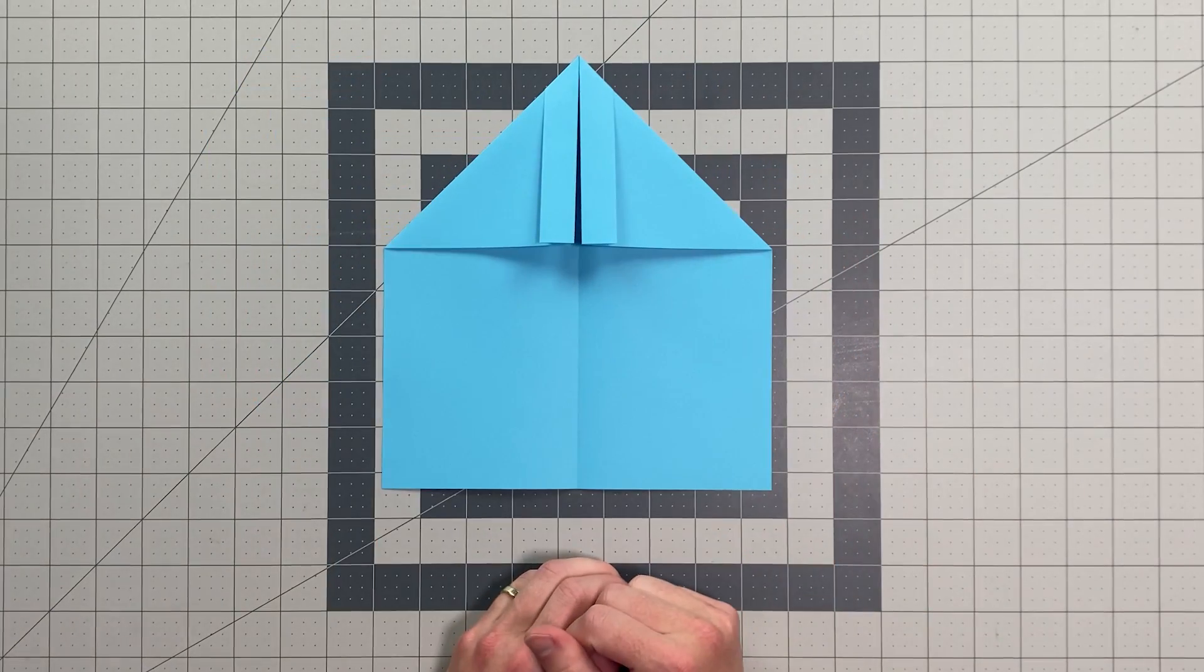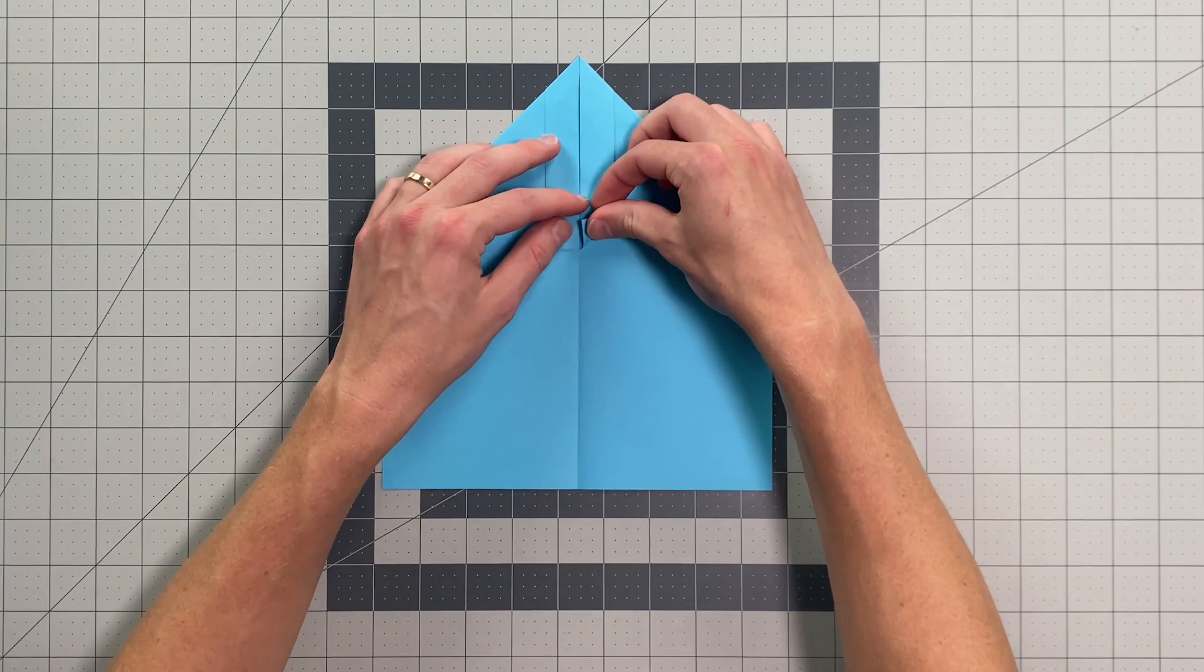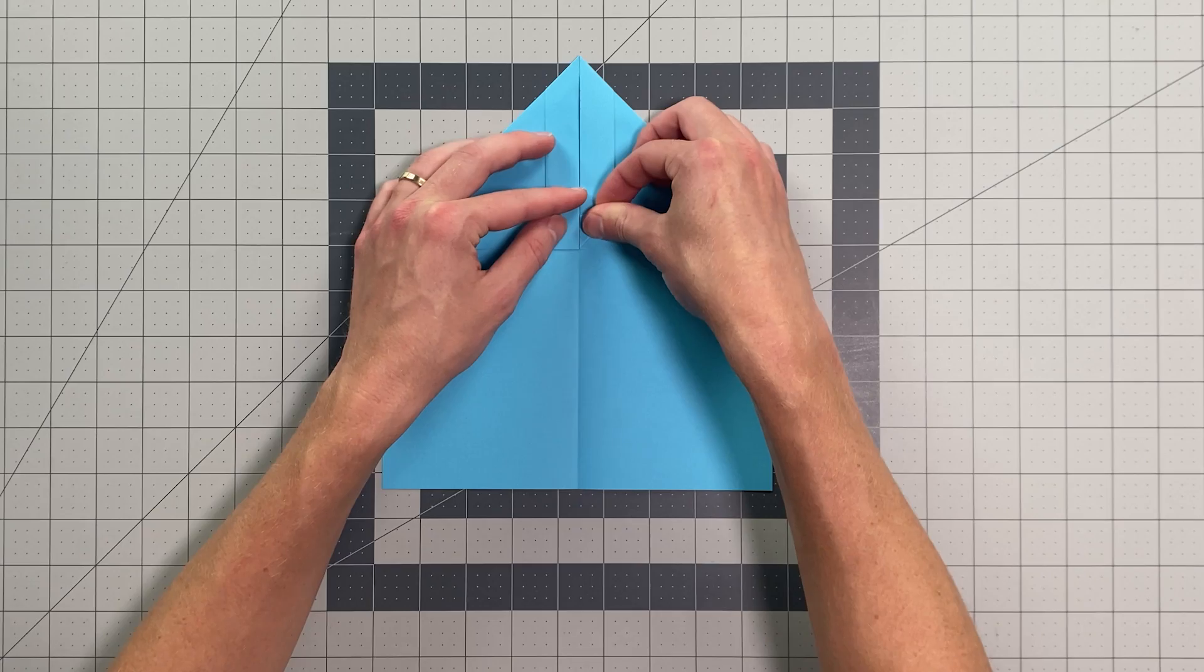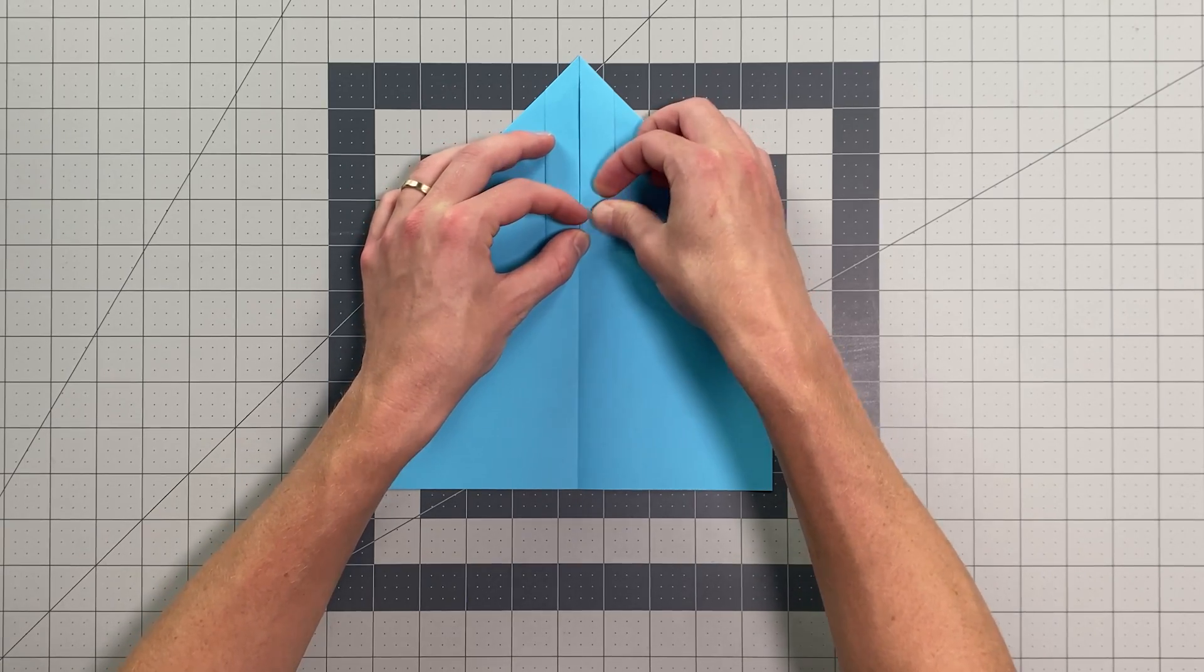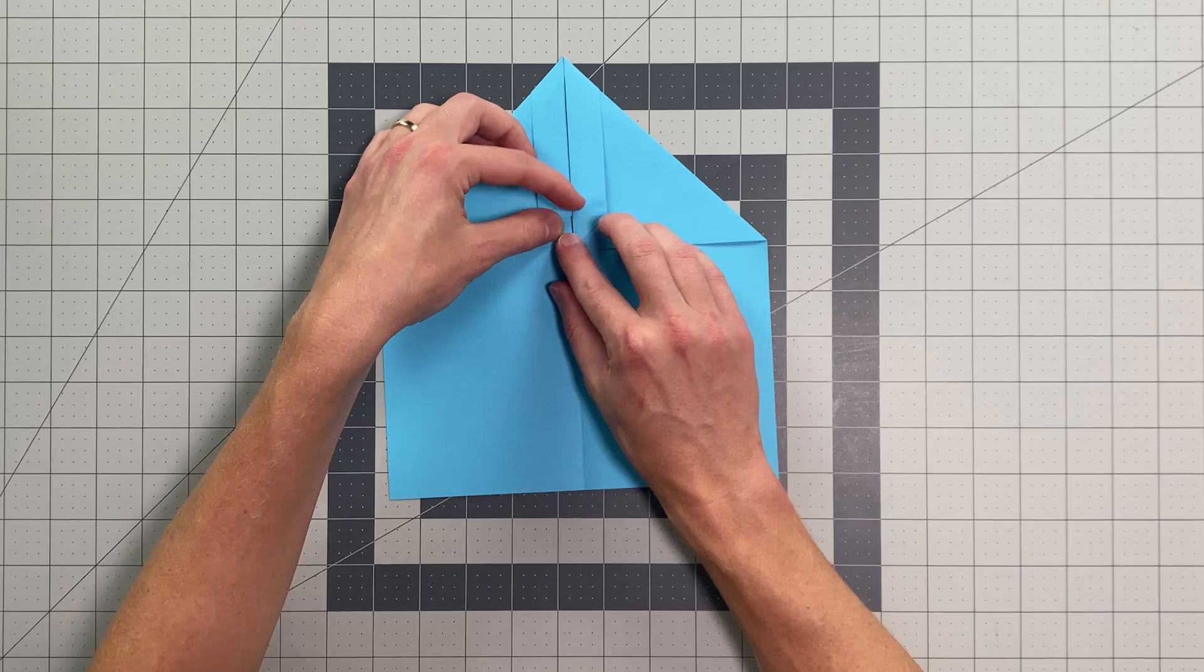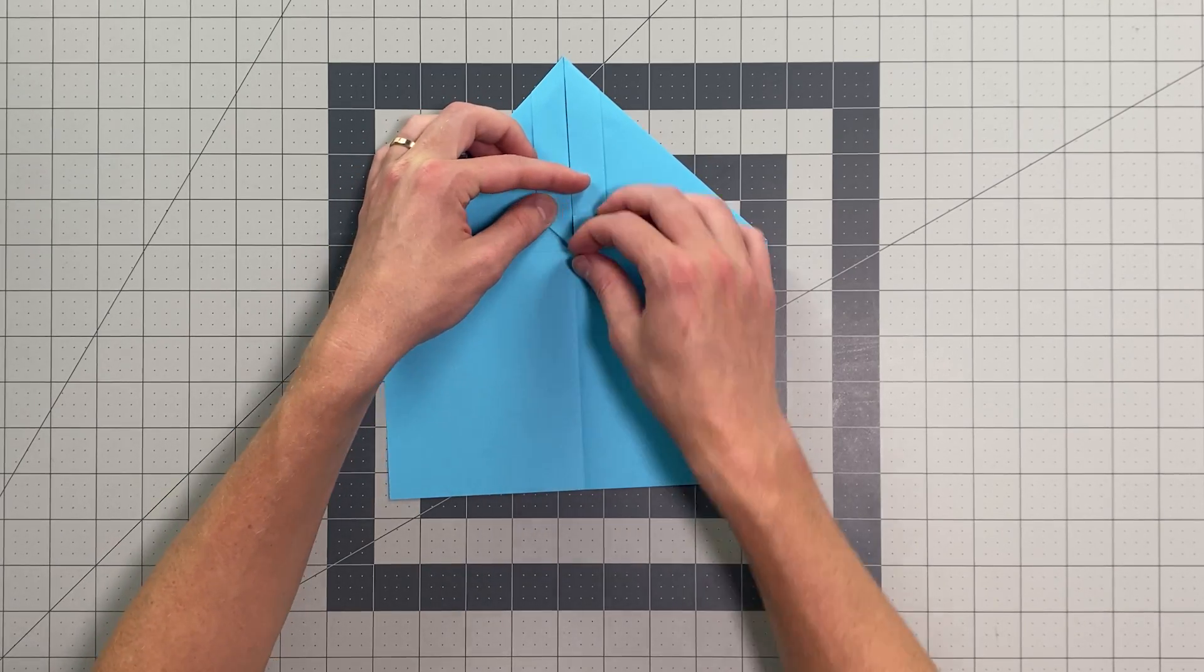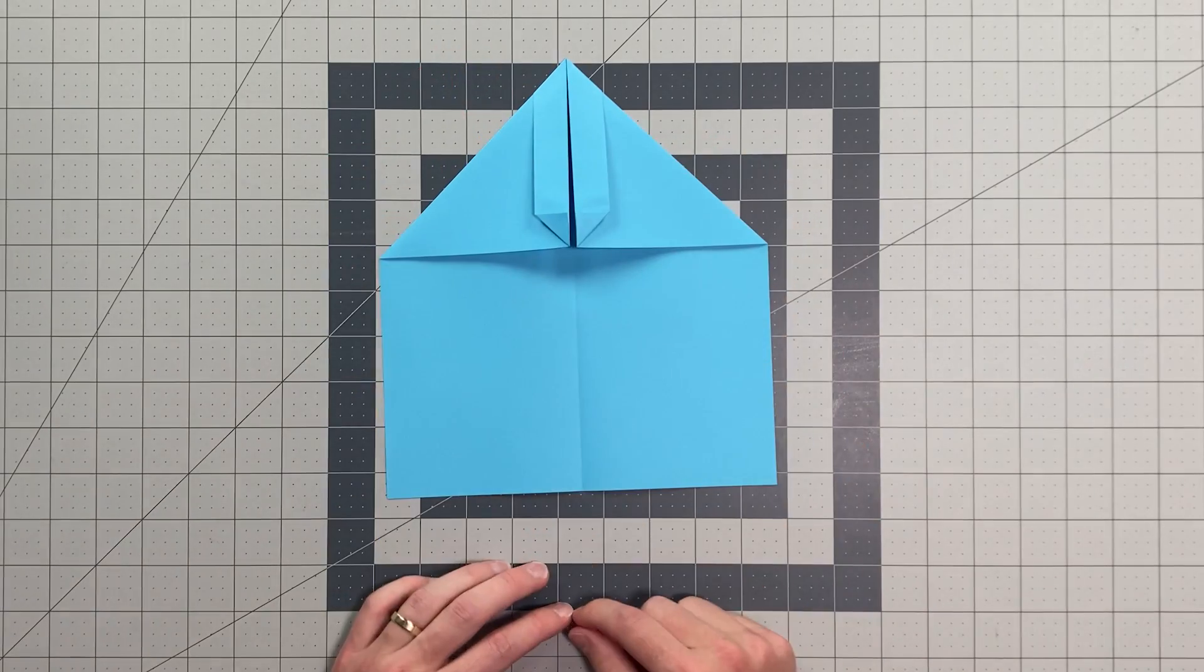Okay, so your plane should look like this. Now I'm going to fold this short little edge of this band here right to the center crease. I want to be really accurate with this. And do the same thing on this side. Just like that.